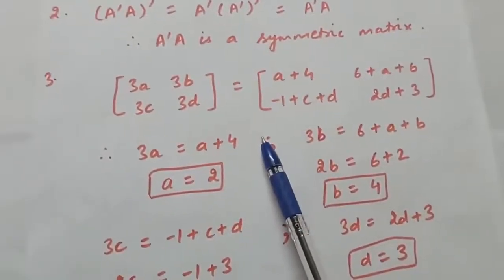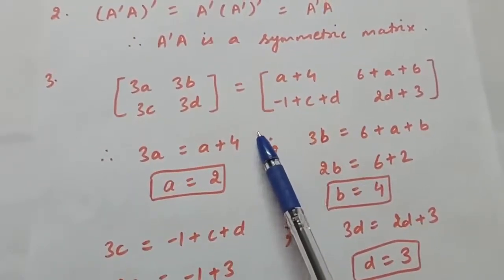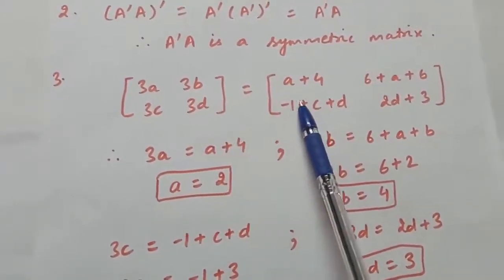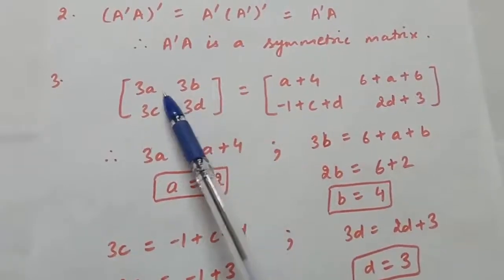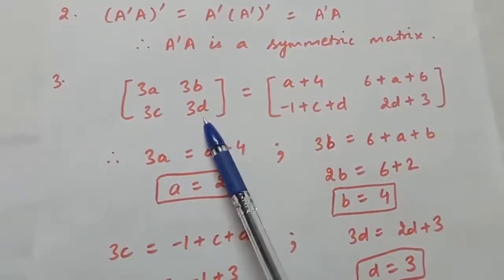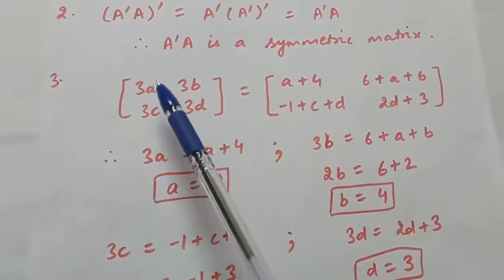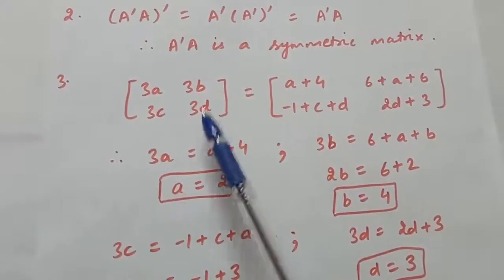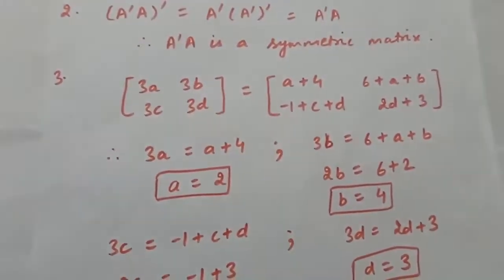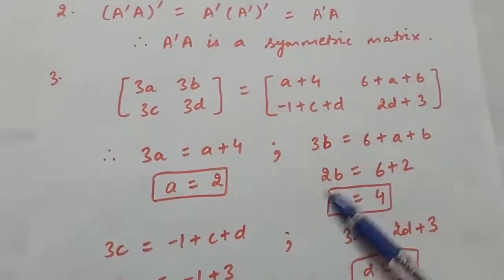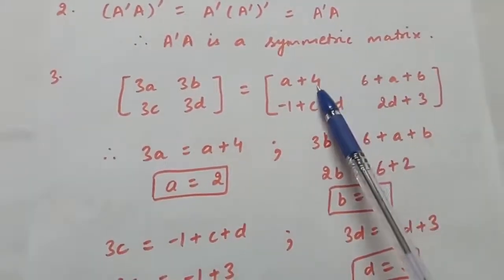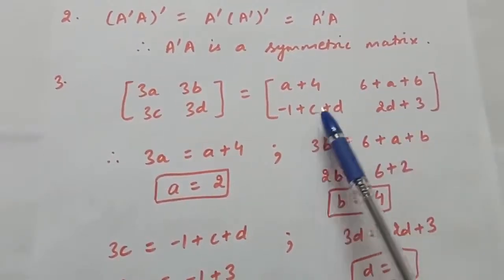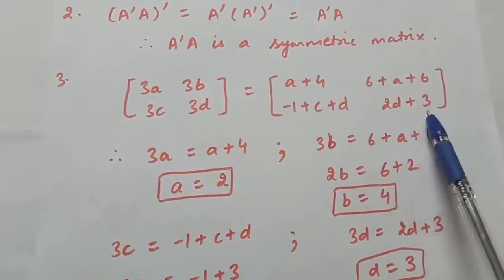Question number 3: find the values of A, B, C, and D. The respective matrices are given equal to 3 times the matrix [A, B; C, D]. Multiplying the elements with 3, it becomes [3A, 3B; 3C, 3D]. On the right hand side, the sum of two matrices is given, which when added gives [A+4, 6+A+B; -1+C+D, 2D+3].